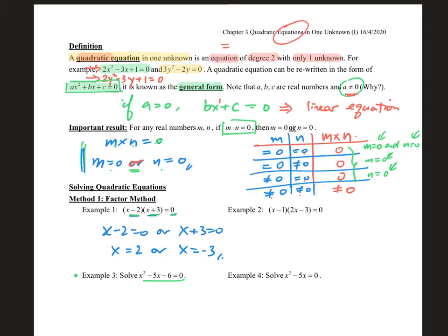Similarly in example 2, you can say x minus 1 equals 0 or x minus 3 equals 0, so x is 1 or — move carefully — x is 3 over 2. So these are the methods of how we can solve a quadratic equation.